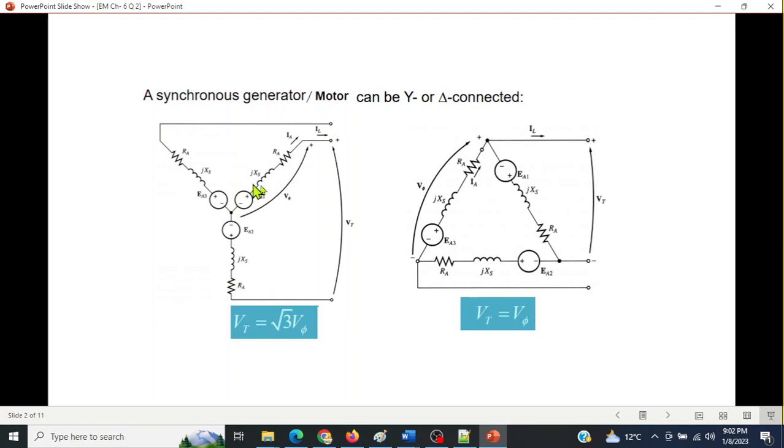Let's first see the difference between Y and Delta connection, whether it is a generator or motor. In the Y connection the terminal voltage VT is different from the phase voltage and the difference is of under root 3. So VT is under root 3 times V phasor. But in case of a Delta, V terminal and V phase are same. So VT equal to V phase.